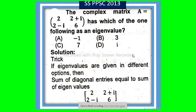In the name of Allah, the most merciful and the most beneficent. Hello everyone, welcome to Mathematics Basic to Advanced Level. In this lecture I will solve Pakistan PPSC Mission 2013, and that is: the complex matrix A is equal to (2, 2+i; 2-i, 6).